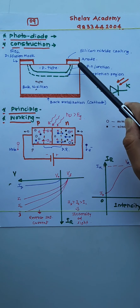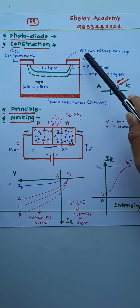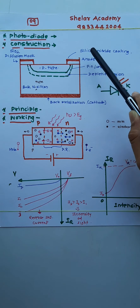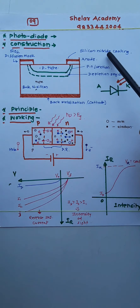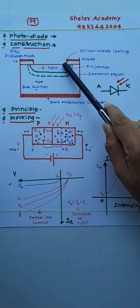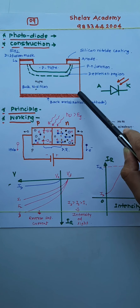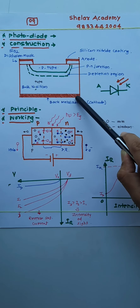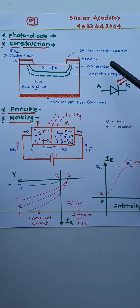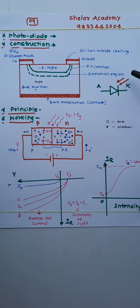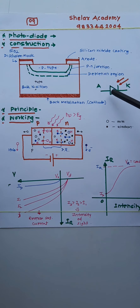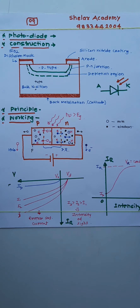Above the P-type semiconductor region, a coating is provided — of silicon nitride, silicon monoxide, or silicon dioxide. This is the anti-reflecting coating. Again here, a metal base is given; it acts as an anode and the other acts as a cathode — called the rear metal contact and front metal contact. This is the symbol for a photodiode; it is a regular P-N junction diode, and the arrows towards the junction indicate that it receives light energy and converts it into electrical energy.